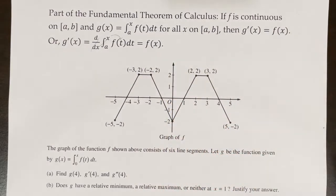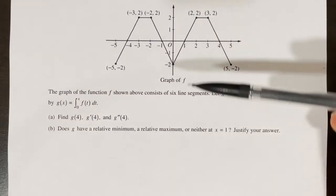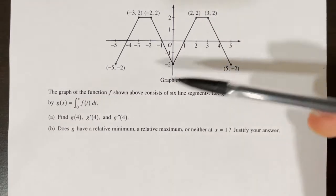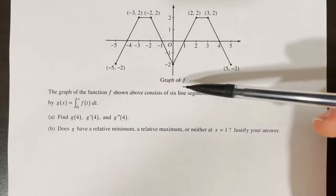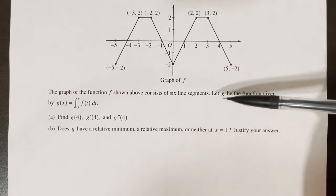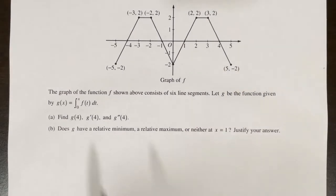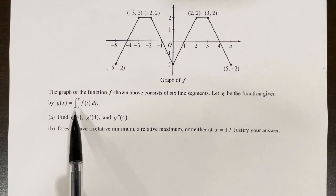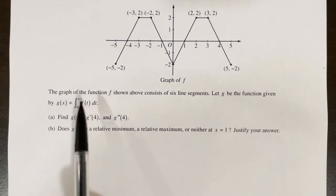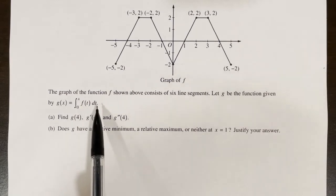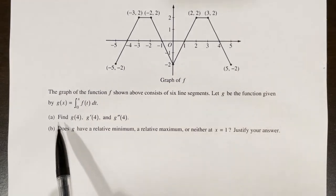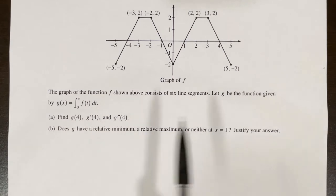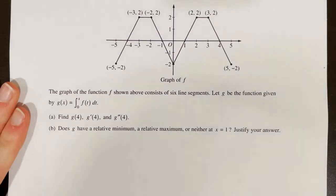If you want to stop and review those before going on to this lesson, I would recommend that. In our first example, we're looking at a graph of the function f. The graph consists of six line segments. Let g be the function given by g of x equals the integral from 0 to x of f of t dt. Part A says find g of 4, g prime of 4, and g double prime of 4.